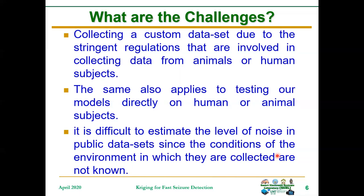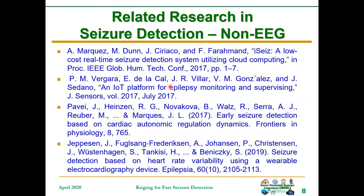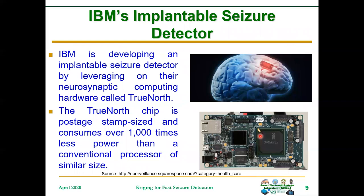It is also difficult to estimate the level of noise from these public data sets because we don't know the conditions of the environment in which they were collected. These are related research works in seizure detection — works that involve the use of EEG and machine learning, as well as other works that do not involve EEG. In the industry as well, work is ongoing to solve the seizure detection problem.